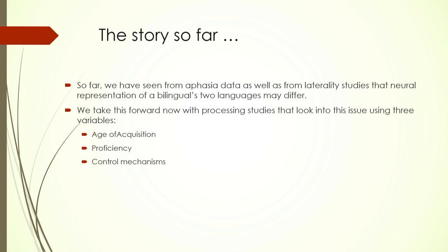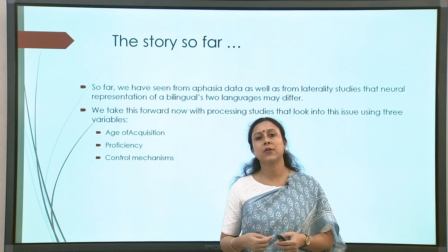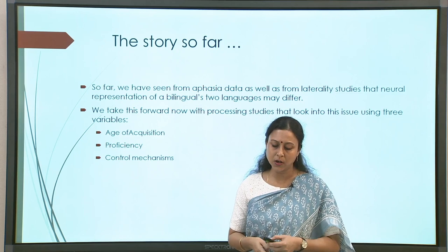This entire part will be discussed in terms of data that have taken three important variables into consideration: age of acquisition, proficiency, and control mechanisms. These three are important aspects — we have already seen that age of acquisition plays an important role in how second language proficiency builds up, so they are connected. Age of acquisition also determines whether someone is a simultaneous bilingual or a successive bilingual, and what the repercussions are.